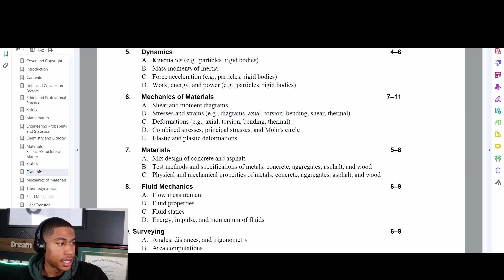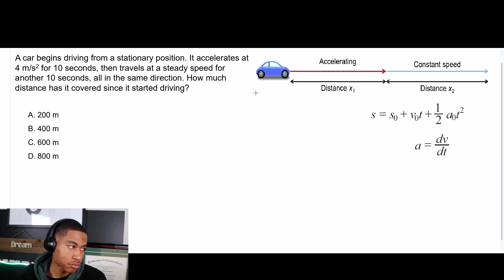Okay, so today we'll be looking at kinematics and I do have a practice problem for you here. This one says a car begins driving from a stationary position. It accelerates at four meters per second squared for 10 seconds. Then travels at a steady speed for another 10 seconds all in the same direction. How much distance has it covered since it started driving?